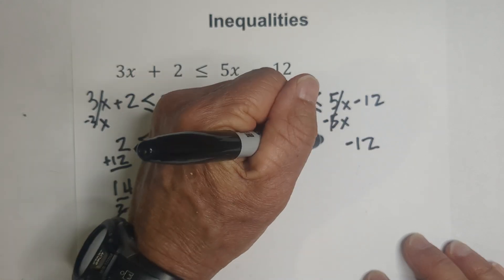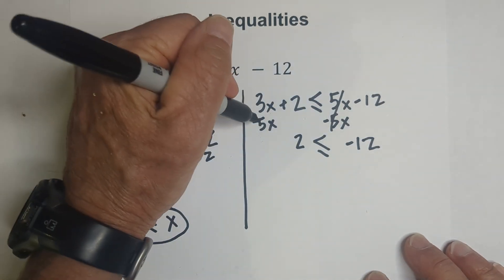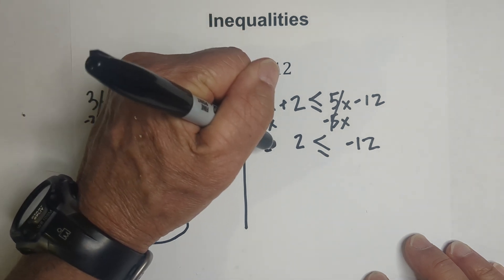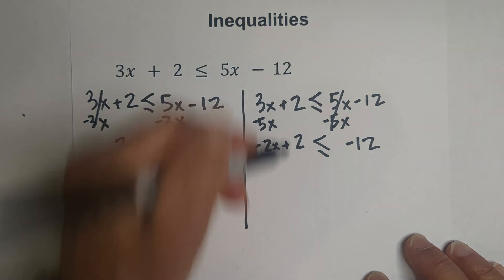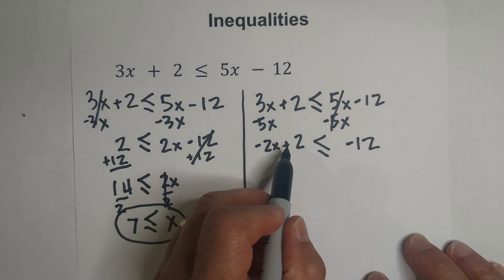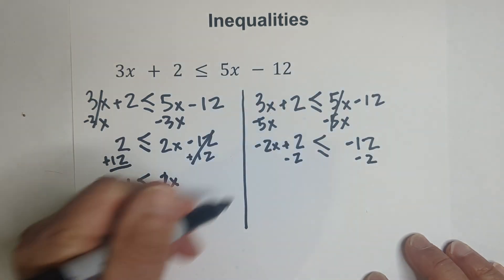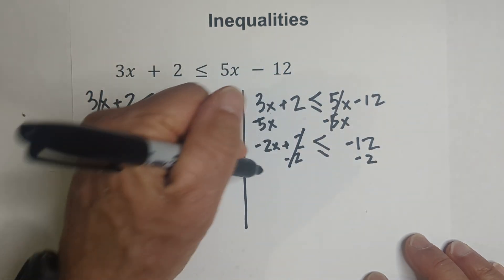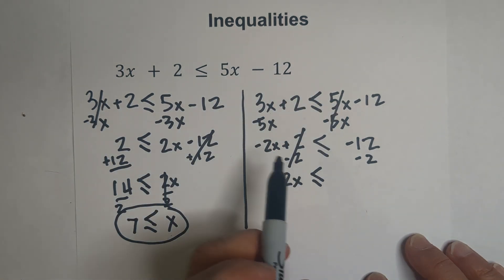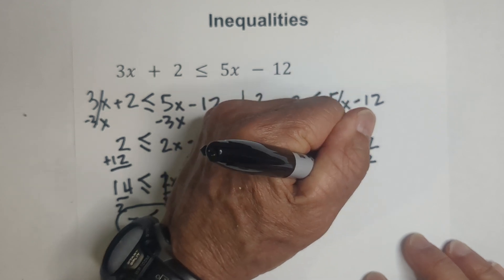The inequality stays the same. Then we have 3x and a negative 5x is a negative 2x plus 2 because I brought this 2 down. Now we need to move the constant to the right, so I'm going to subtract through by 2, which is an inverse operation. Bring down the negative 2x. The inequality sign so far stays the same, and then negative 12 and negative 2 is negative 14.